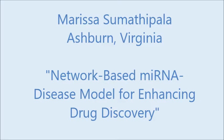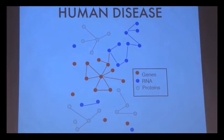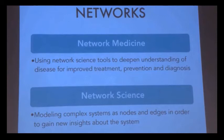The traditional perspective on disease is that they are the result of an abnormality in a single gene. However, in reality, diseases are the product of perturbations in complex interconnected cellular components, like genes, RNA, and DNA. Given this, in order to deepen our understanding of disease etiology, a systems biology approach is needed.